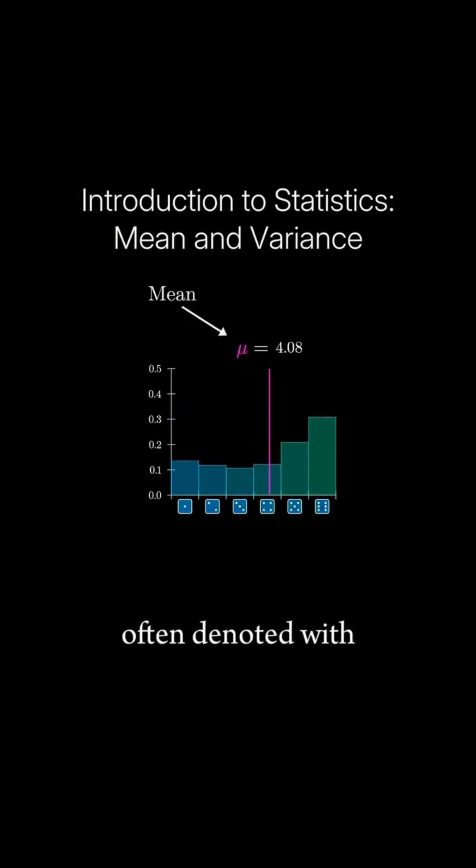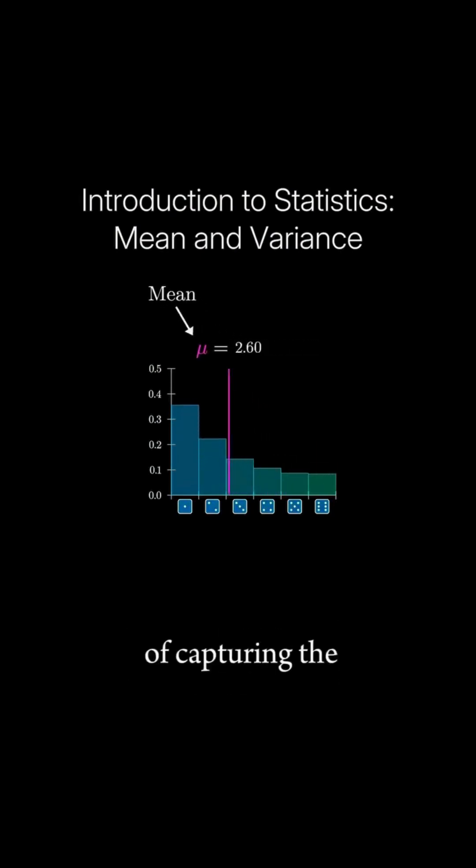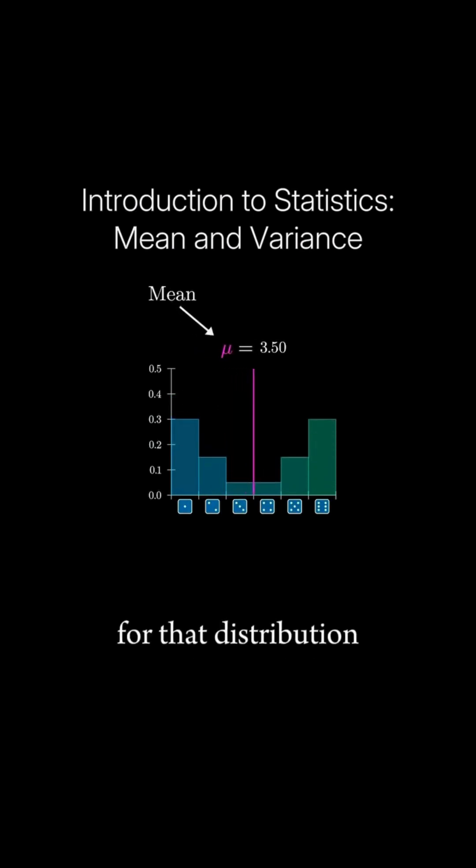The mean of a distribution, often denoted with the Greek letter mu, is a way of capturing the center of mass for that distribution.